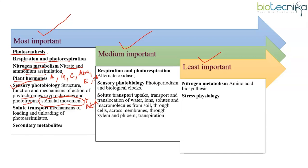For solute transport, the most important part is the mechanism of loading and unloading of photoassimilates. Then for secondary metabolites — whether it is terpenes, phenolic compounds, or alkaloids — all three are important. Under this, we also have the jasmonic acid and salicylic acid pathways. These are the most important topics from Unit 6.